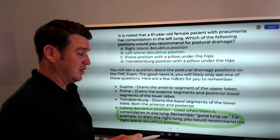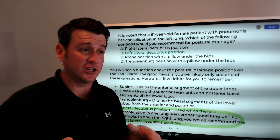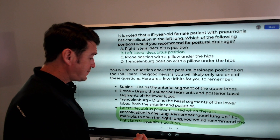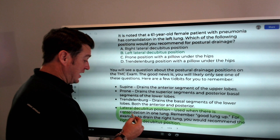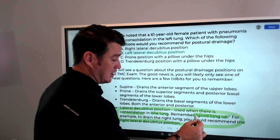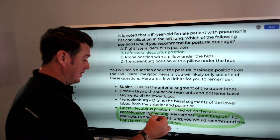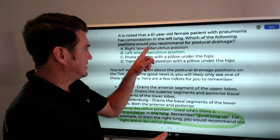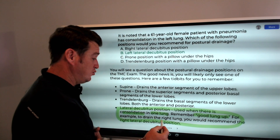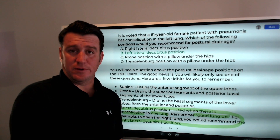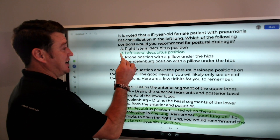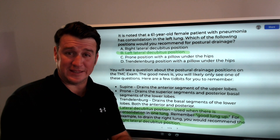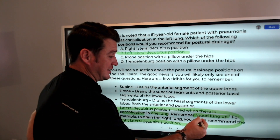Here is where the confusion comes in — the statement about lateral decubitus position. Lateral decubitus means putting the patient on one side or the other, left or right. When there is a unilateral consolidation, the source says 'good lung up.' For example, to drain the right lung, you would recommend the right lateral decubitus position, meaning you put the right lung down — that's the affected lung. For the scenario with left lung consolidation, they say put the left lung down, meaning left lateral decubitus. This scenario is claiming good lung up.